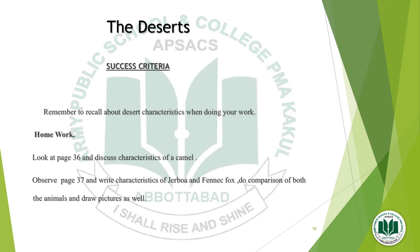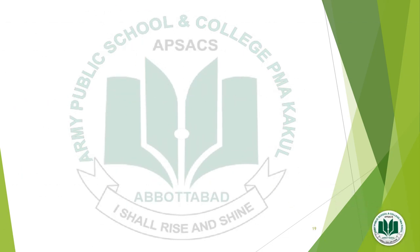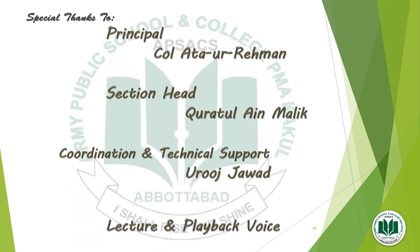Kids, our success criteria is to remember to recall about desert characteristics when doing your work. Your homework is to look at pages 36 and 37. You will write about the characteristics of the camel, jerboas, and fennec fox, then do a comparison of jerboas and fennec fox, and also draw their pictures.